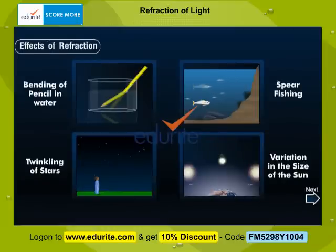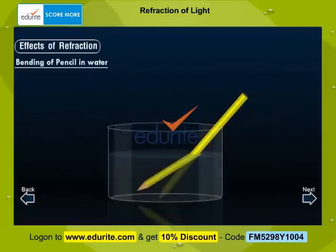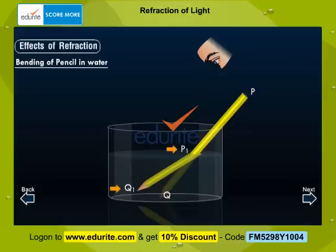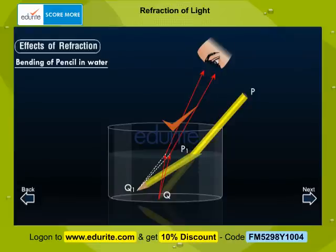Here are some of the effects of refraction. A straight pencil PQ, when immersed obliquely in water, a portion of it appears to be shortened and raised up as P1Q1 under the water. Rays of light from point Q are travelling from water to air. As the rays of light are travelling from a denser medium to a rarer medium, they bend away from the normal. After refraction at the surface, they appear to be coming from point Q1, which is true for each and every point of the part of the pencil immersed in water.